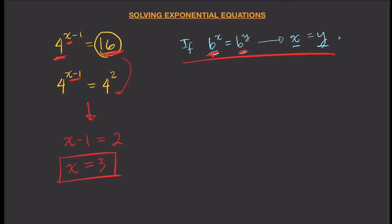In fact, if I plug this value x equals 3 in here, I will get 3 minus 1, which is 2. Then 4 squared will give me 16, and that's exactly correct. So my solution is x equals 3. That's how we find a solution.